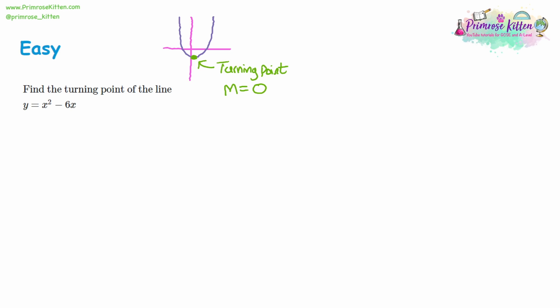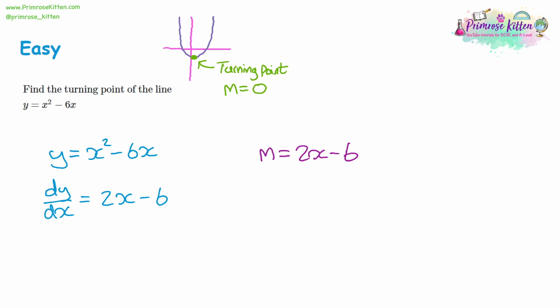We take our line y equals x squared minus six x and differentiate it to find the gradient. Bring down the two to give two x, and six x becomes six. So the gradient is equal to two x minus six. We know that at the turning point the gradient equals zero, because there's no steepness at that point. So zero equals two x minus six. Adding six to both sides gives six equals two x, and dividing by two gives x equals three.